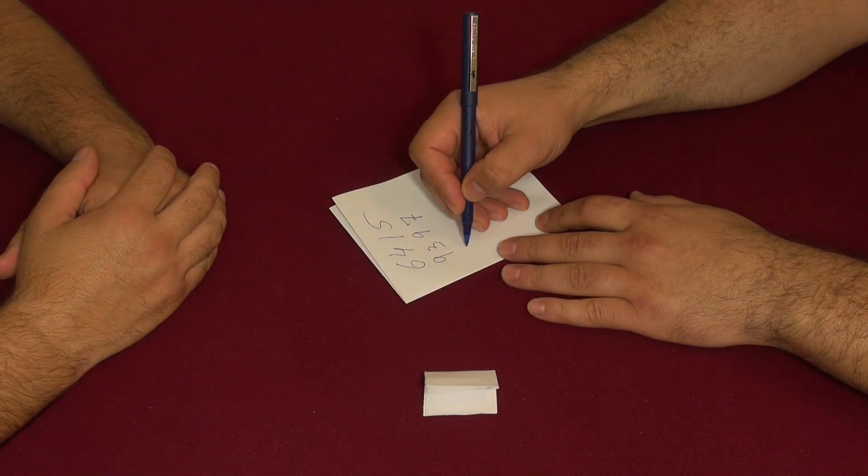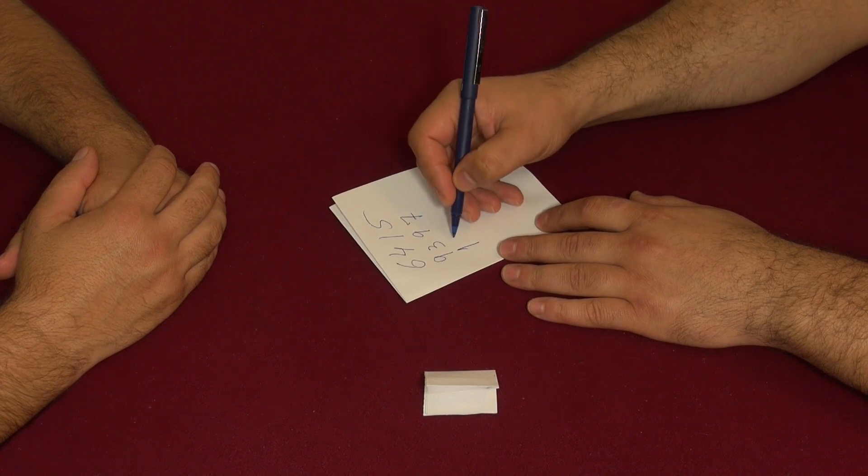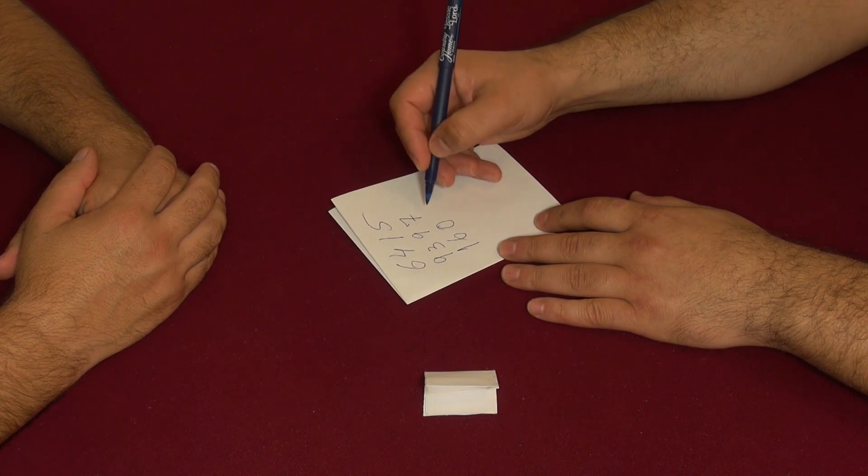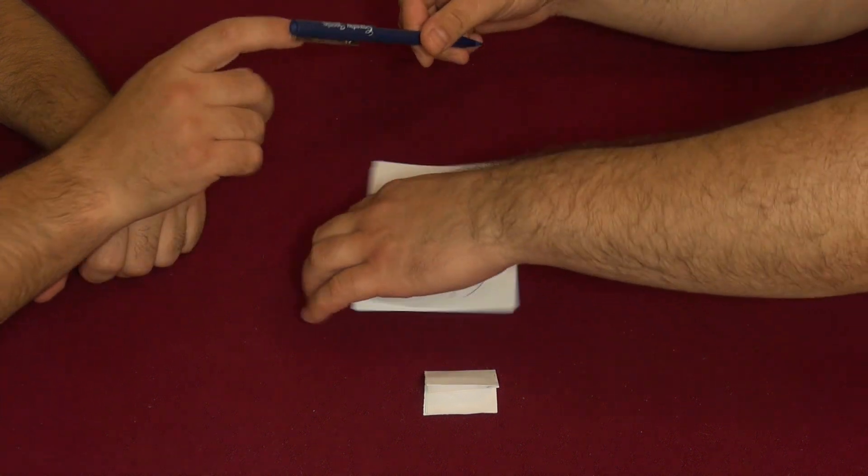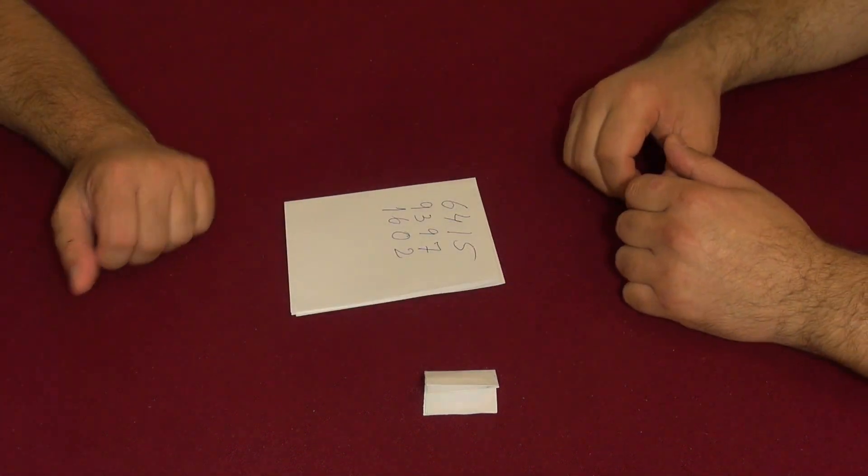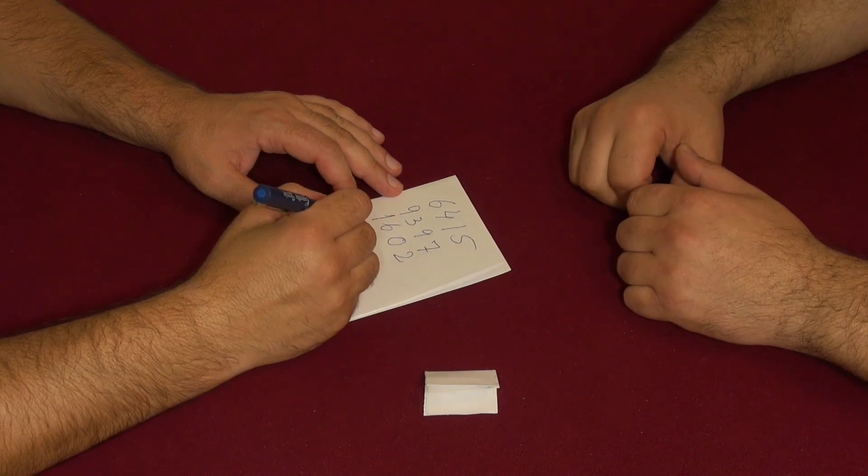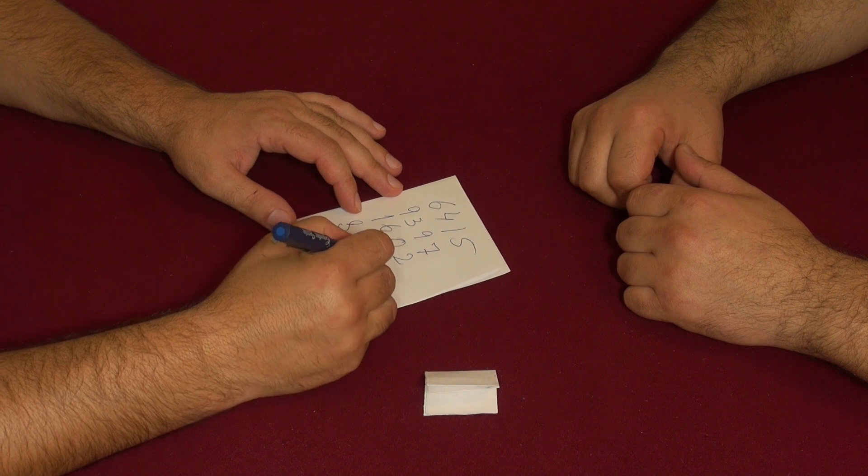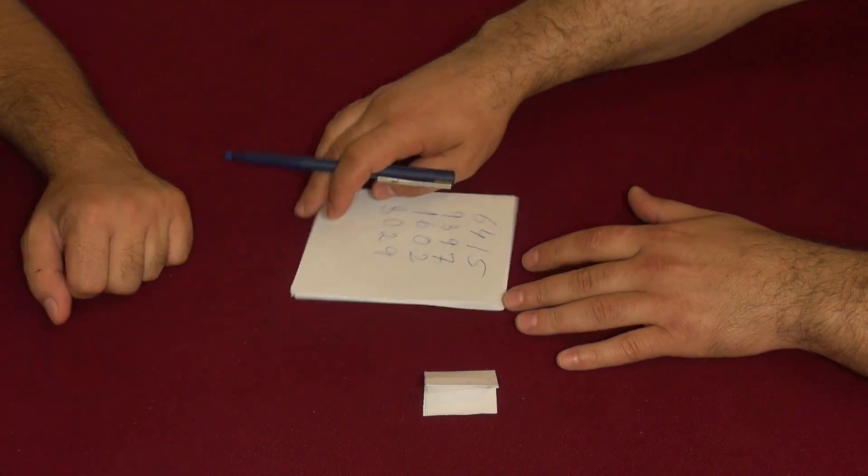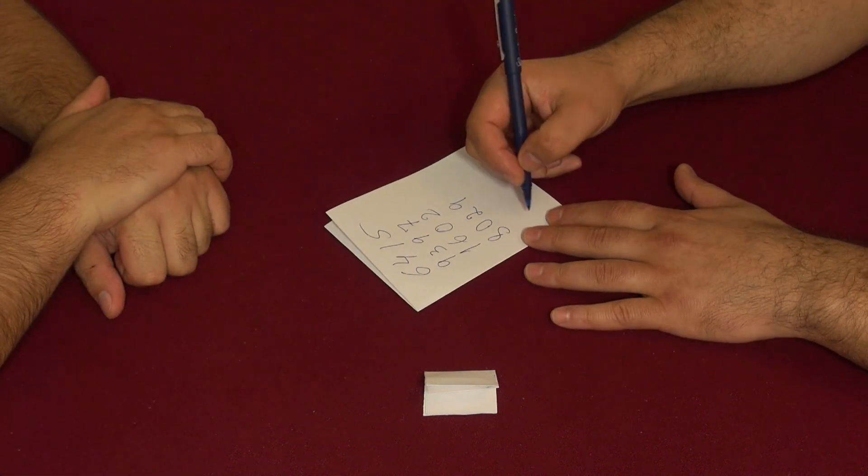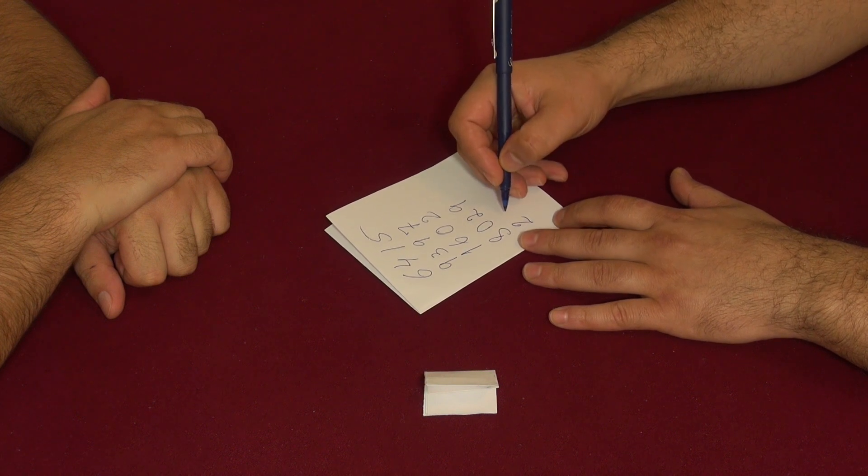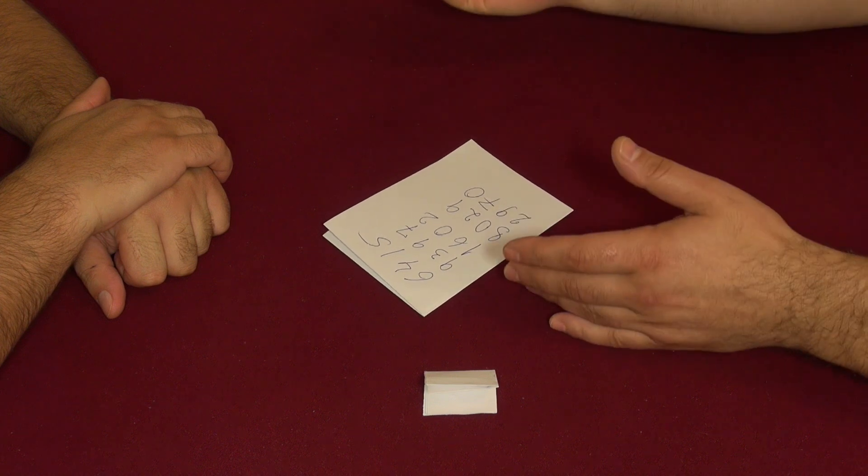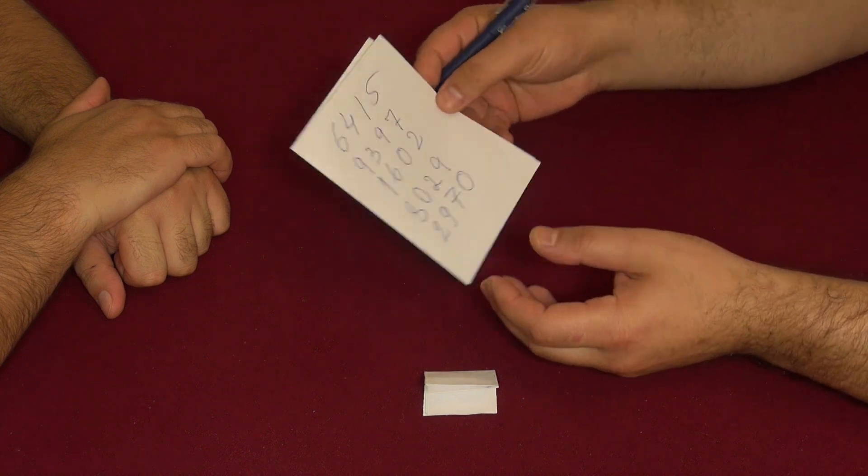And now you write one more four-digit number, any four-digit number you want. 8029. Great. Now I'll write 2970, for example. Right, so we got now five four-digit numbers, random numbers.